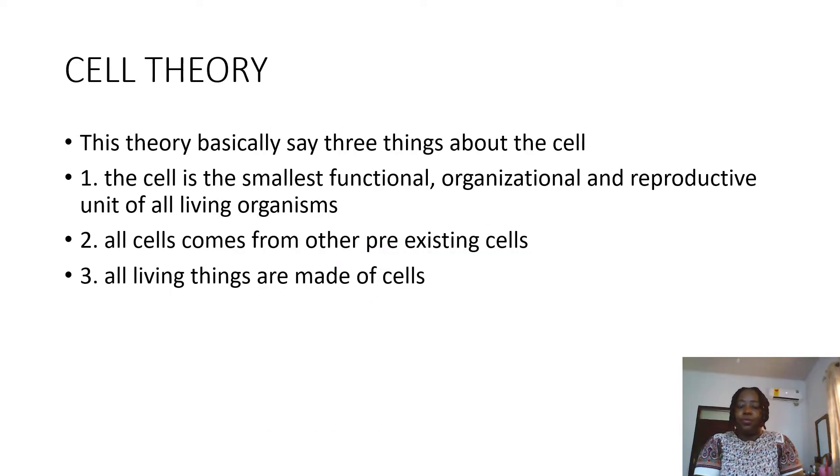We have a modern cell theory that summarizes everything about the cell. It basically says three things. One, that the cell is the smallest functional, organizational, and reproductive unit of all living things. It means that if you are a living organism, whatever you are right now is a reflection of your cells. Whatever is going on in your cell is what would determine how you function, how your systems would be organized, and how you reproduce.